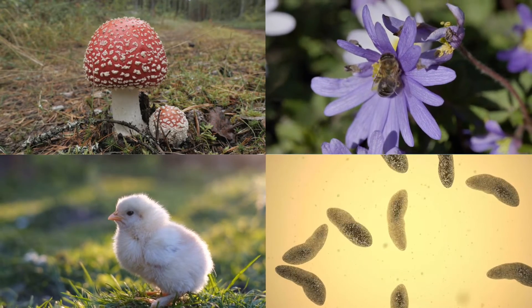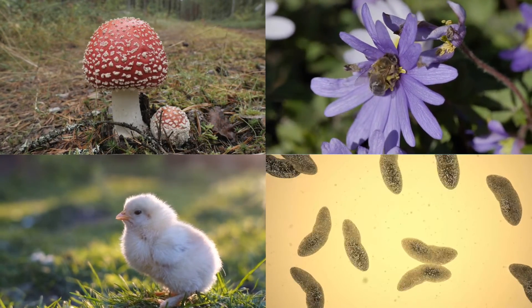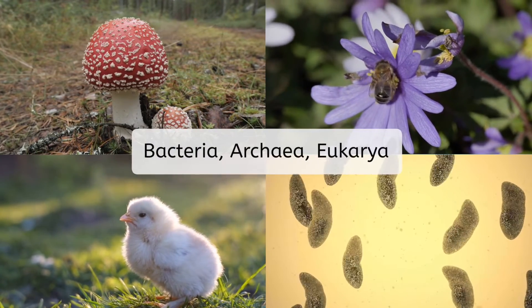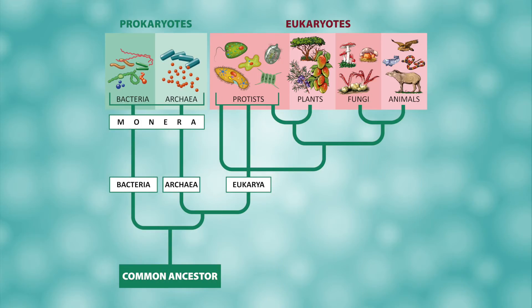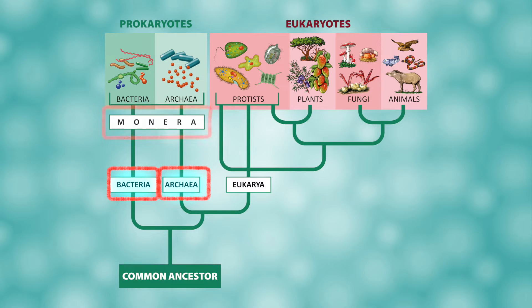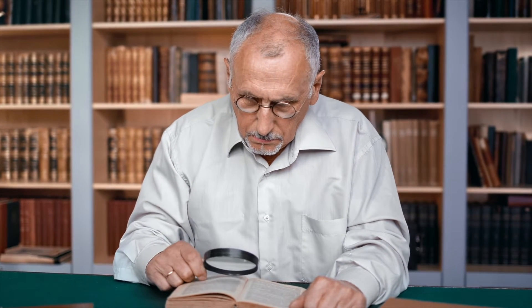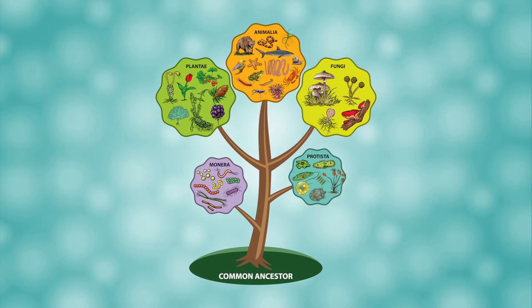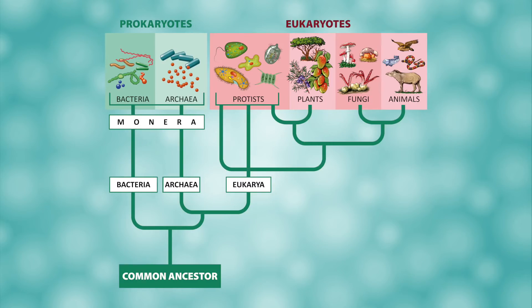Remember that all living things can be grouped into one of three domains: bacteria, archaea, and eukarya. Two of these domains have only prokaryotic organisms — bacteria and archaea — and they are sometimes collectively referred to as monerans. Interestingly, scientists didn't recognize the difference between bacteria and archaea for a very long time, and initially grouped them together into one kingdom called Monera. Even though they are now known to be two very different domains, the name sort of stuck.